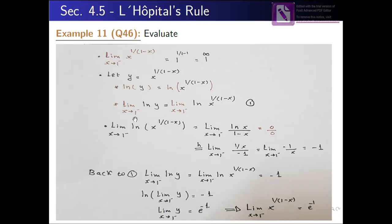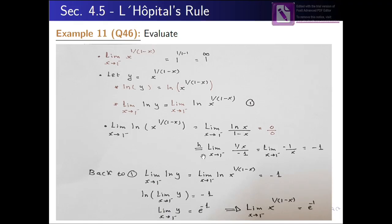نضيف limit عندما x تقترب من 1 من اليسار للطرفين. من الطرف الأيمن نبسط ln(x^(1/(1−x))) بنخلي الأس قدام ln فيصير عندنا ln(x)/(1−x) لما x تقترب من 1 من اليسار. لما نحسب الليمت يطلع 0/0 وهو indeterminate form.